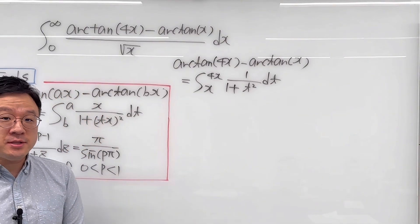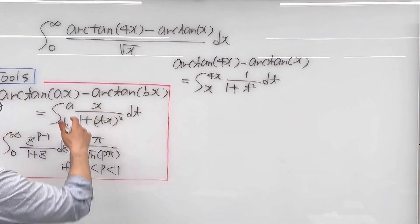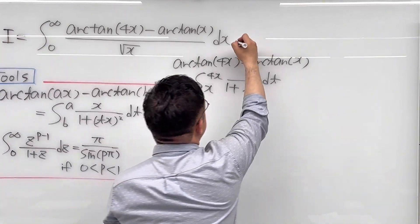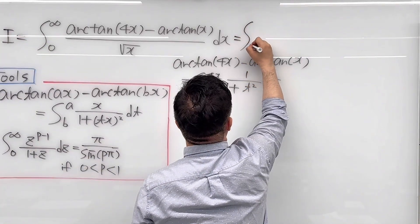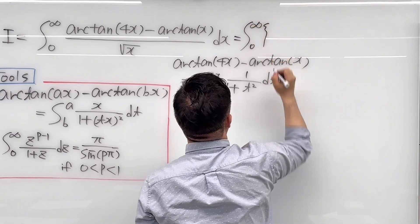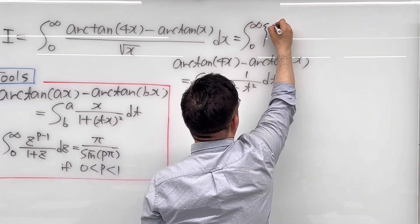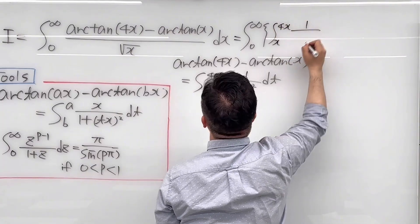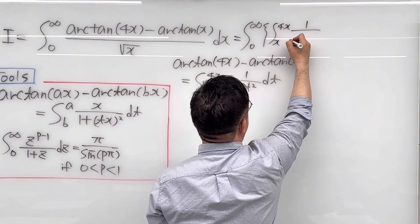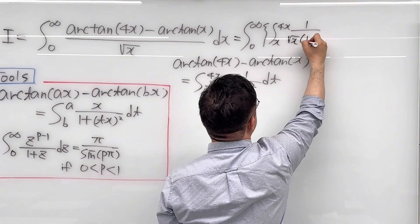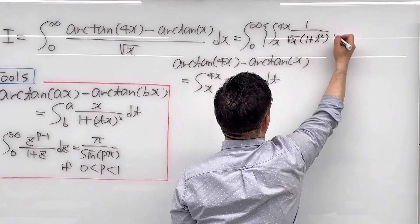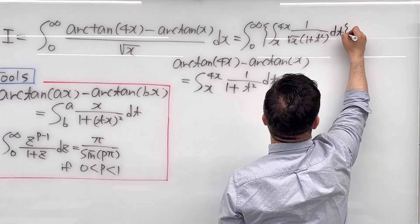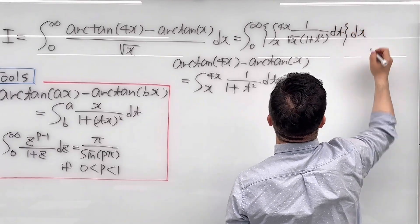I'll be using Fubini's theorem to rewrite this integral. So I'll be calling this integral just I, and then we can rewrite this as the integral from 0 to infinity — making a bracket — and then the integral from x to 4x of 1 over square root of x times 1 plus t squared. Now we have dt, close the bracket, and we have dx after.